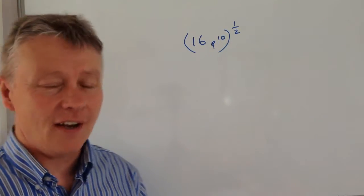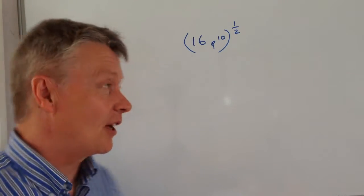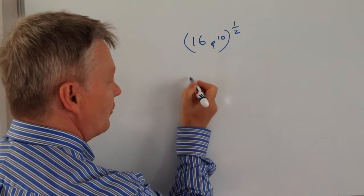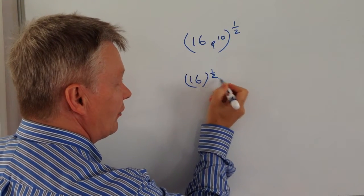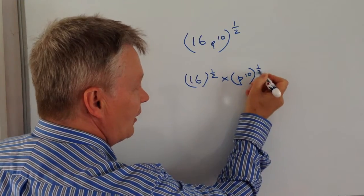Well, when we have something to the half, the power of a half, it basically means the square root. So what we're doing here is we're saying we've got 16 to the power of a half multiplied by P10 to the power of a half.